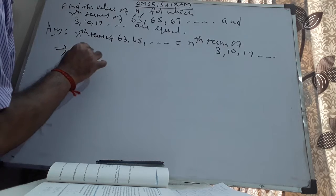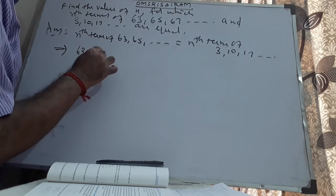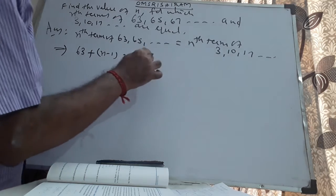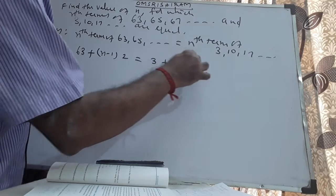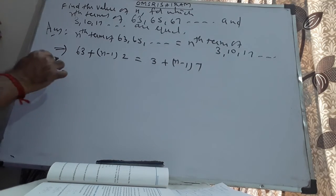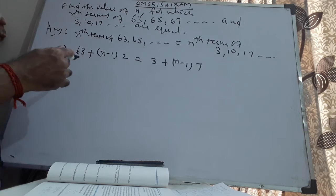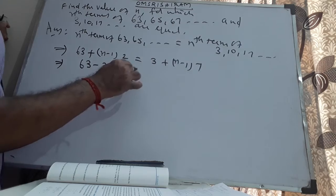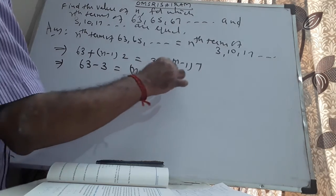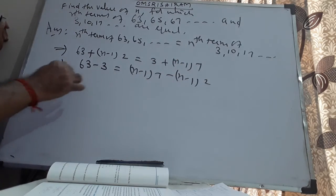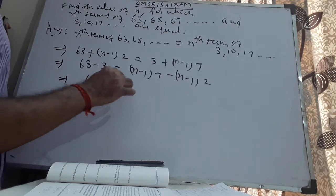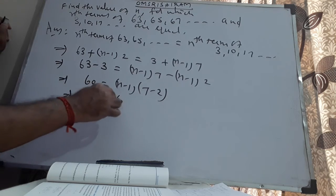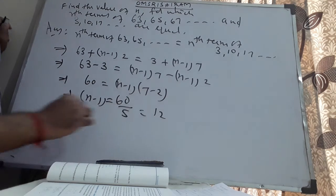Let me substitute the values directly. 63 plus n minus 1 into 2 is equal to 3 plus n minus 1 into 7, since the common difference here is 7. Therefore, 63 minus 3 equals n minus 1 into 7, minus n minus 1 into 2. Which implies 60 equals n minus 1 into 7 minus 2, which is 5. So n minus 1 equals 60 divided by 5, which equals 12.